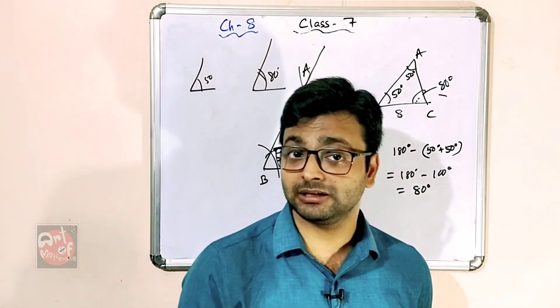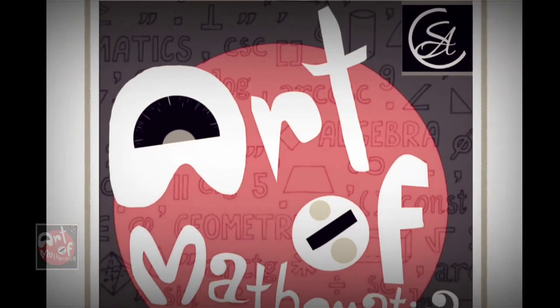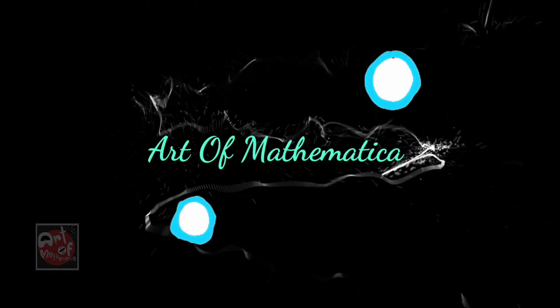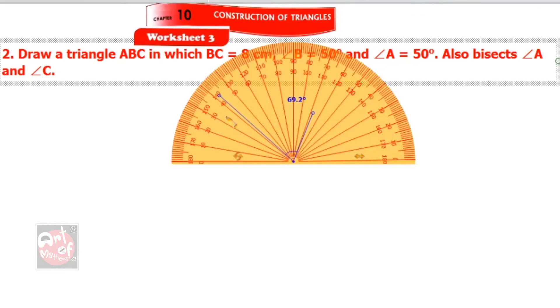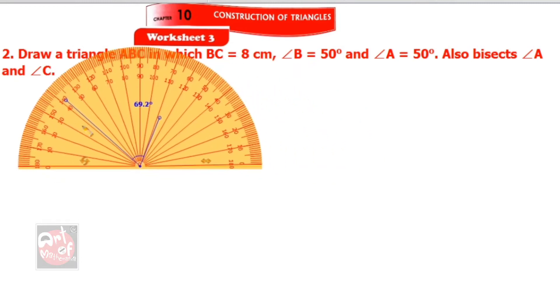Let's start Question Number 2 of Worksheet 3: Construct triangle ABC in which BC equals 8 centimeters, angle B equals 50 degrees, and angle A equals 50 degrees. Also bisect angle A and angle C. Since both angles are 50 degrees, I only need to draw the copied angle once, then do the remaining part.